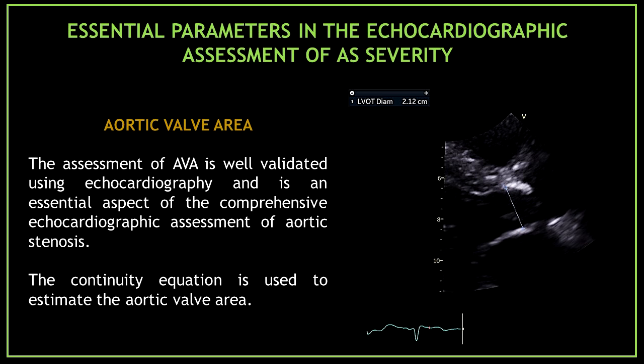The next essential parameter in the echocardiographic assessment of aortic stenosis severity is aortic valve area. The assessment of aortic valve area is well validated using echocardiography and is an essential aspect of the comprehensive echocardiographic assessment of aortic stenosis.